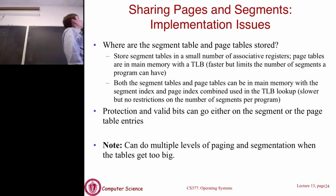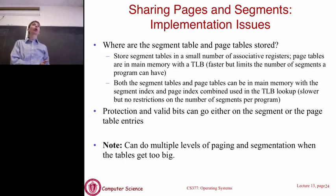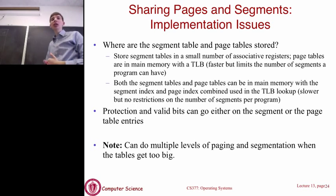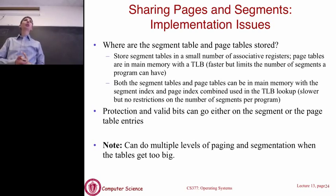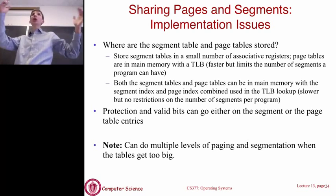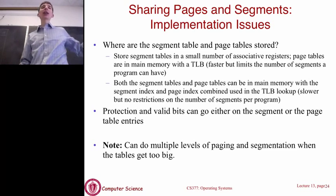Each process now has one segment table — which can be stored in registers since it's small — and a variable number of page tables depending on the number of segments. Page tables are still stored in main memory, and you still use a TLB to make paging fast. You could also combine the segment table with the TLB in main memory, where the TLB entry would associate a segment number and page number pair to a frame number. But in practice, usually you just store the segment table in some registers.